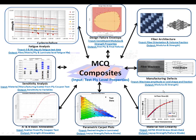The chart you see now shows how MCQ Composite can help you in different aspects. On the top is a screen snapshot of the design failure envelope. On the top right-hand side is fiber architecture — we will start the demo with that. On the lower right side you have material nonlinearity.